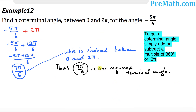Finally, we've been asked to find the coterminal angle for negative 5π/6 that must be between 0 and 2π. Since it's negative, we add 2π: negative 5π/6 plus 12π/6 gives 7π/6, which is indeed between 0 and 2π. Thus, 7π/6 is the required coterminal angle.